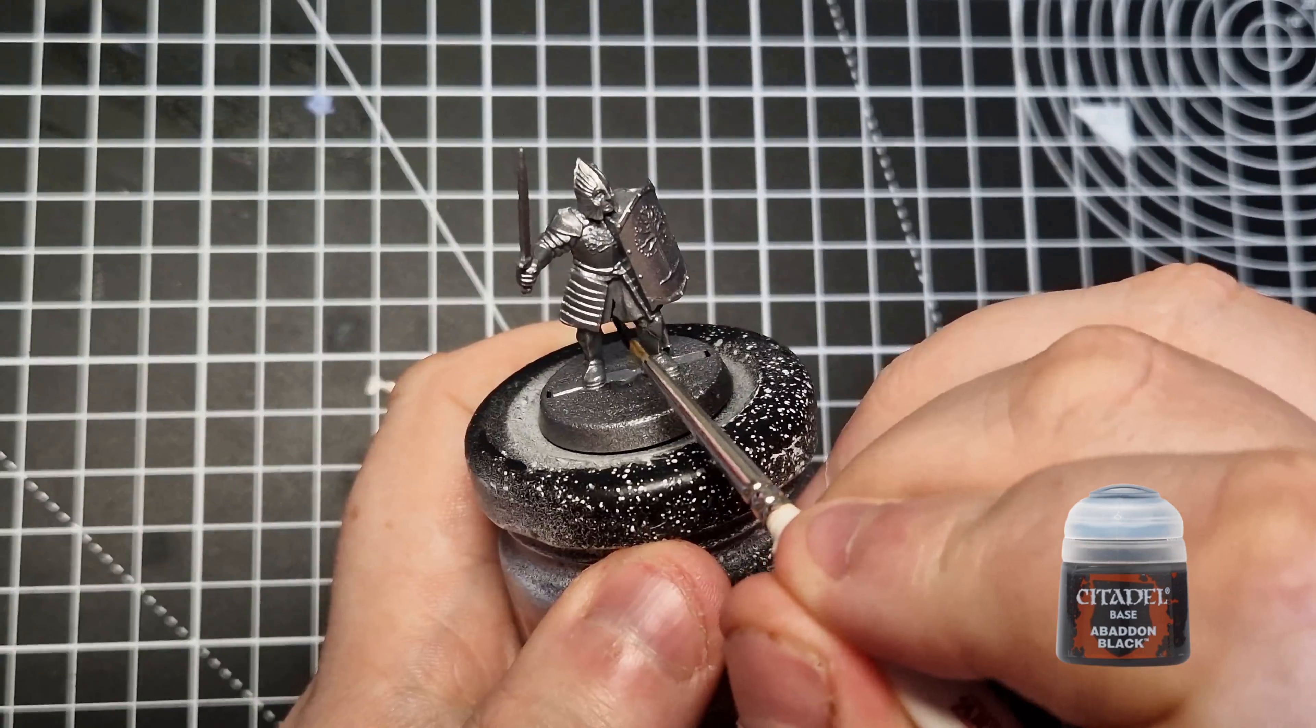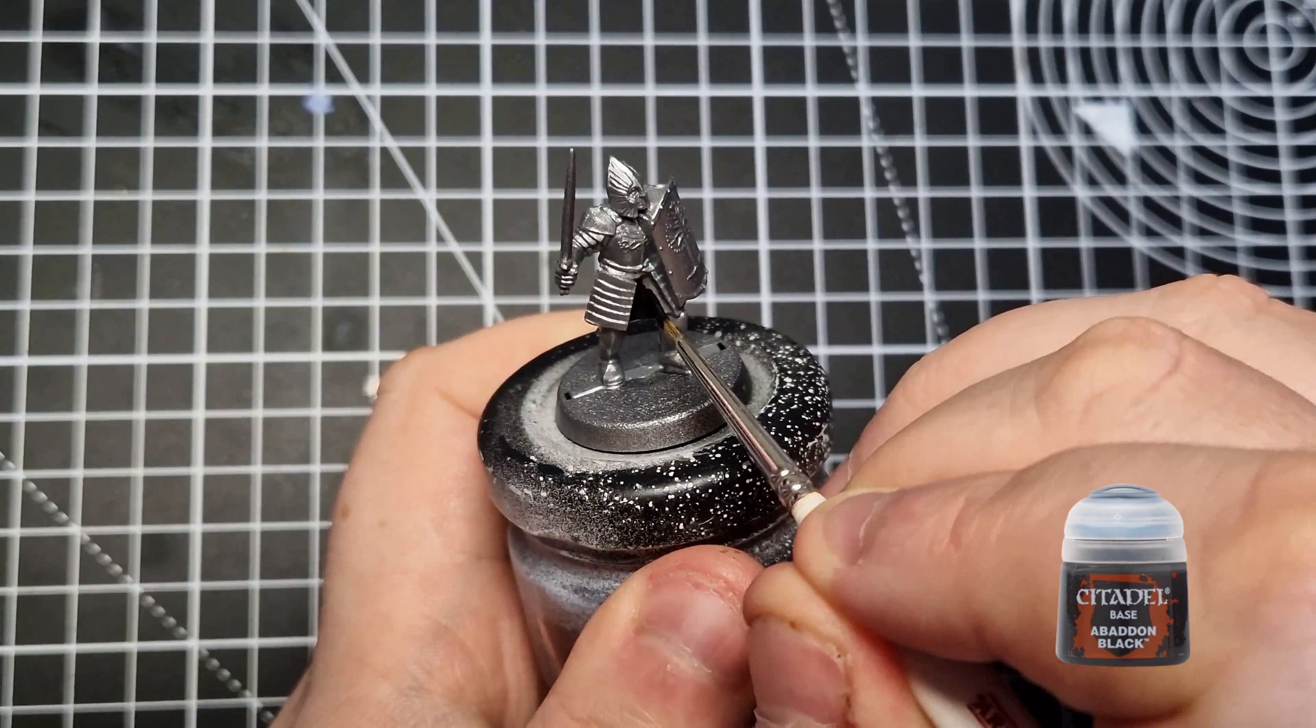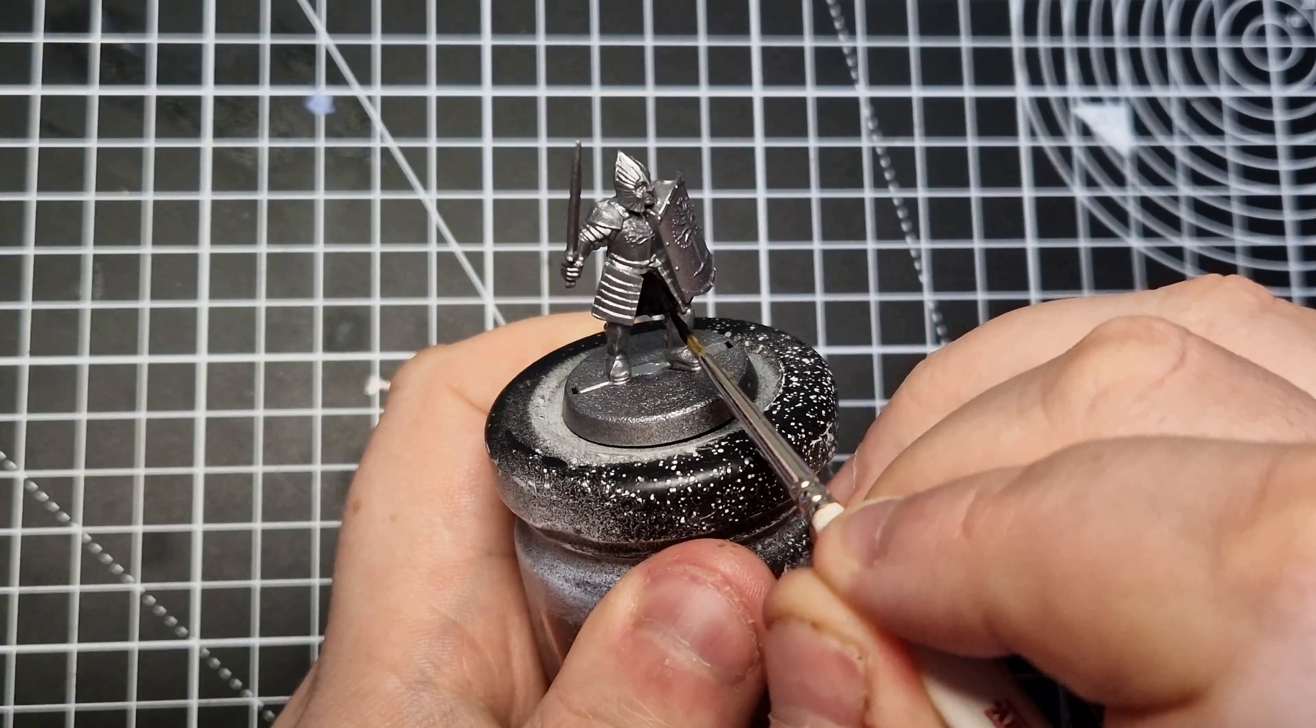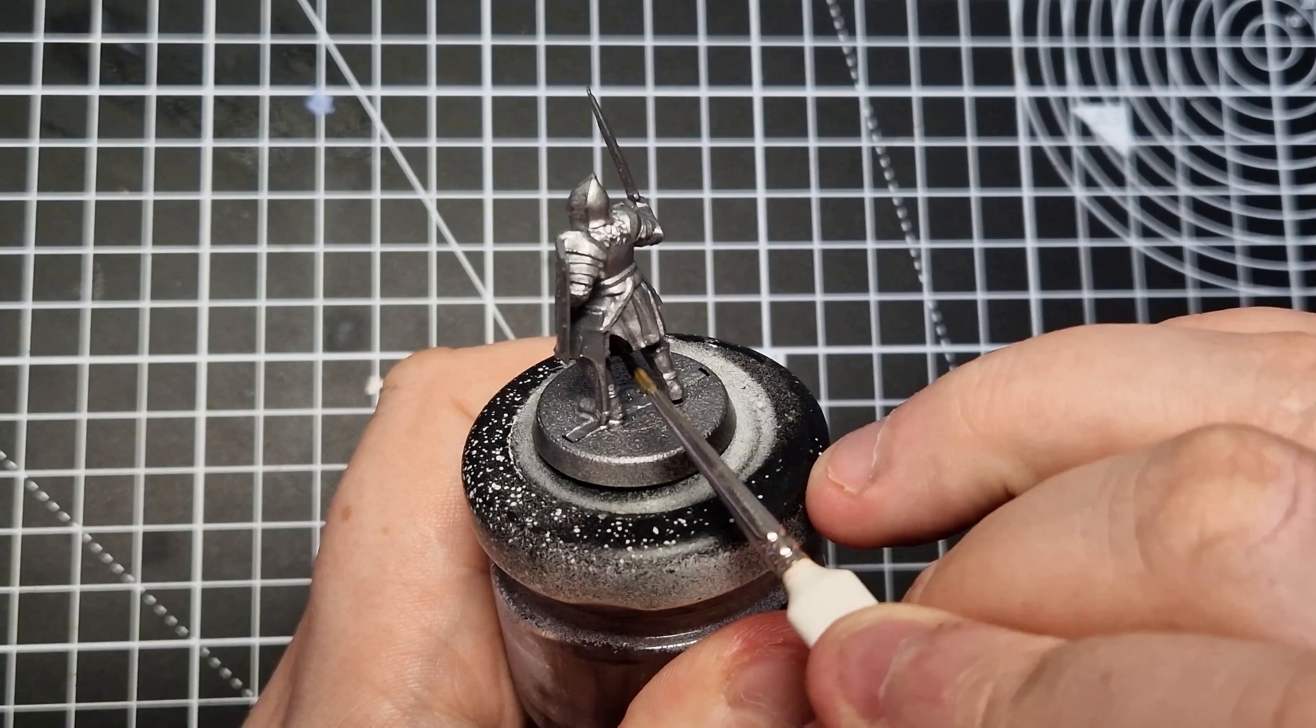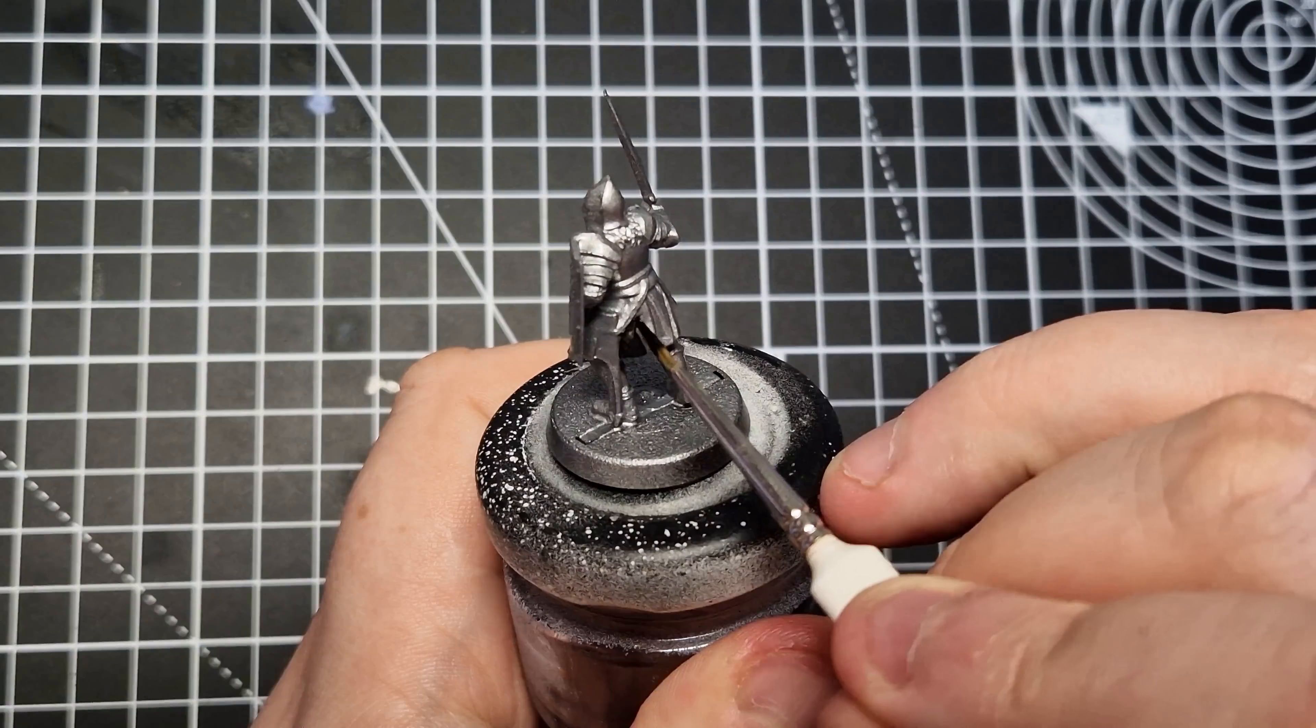The first colour we're going to use is Abaddon Black, which we're going to use for all of the fabric. So, the skirt, the trousers, make sure we get the backs of the legs and the shoes and under the arms, so under the armpits, there's some fabric showing as well. You can also colour his hair in if you want to give him black hair. Just make sure to use two thin coats to cover all this metal paint.